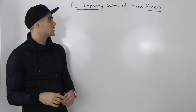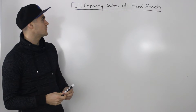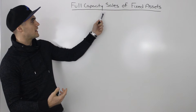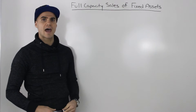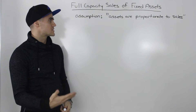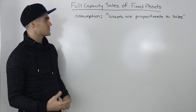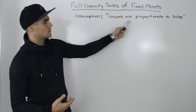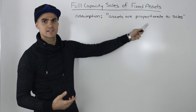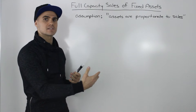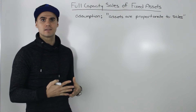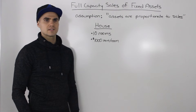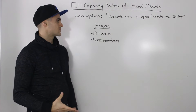Welcome back everybody. In this video we're going to talk about the next section of this chapter, which is the full capacity sales of fixed assets. So far up until this point, the examples we've done have made a big assumption: that assets are proportionate to sales, or assets vary with sales. However, in reality this is not always going to be true. So let's illustrate this through an example.